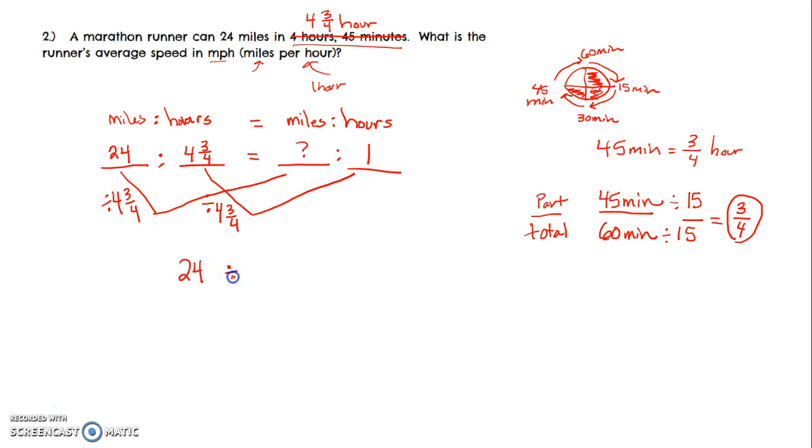So let's go ahead and do that. 24 divided by four and three-fourths. We first have to remember our standard algorithm for division. When we're going to divide, we need to rewrite this. The standard way is we need to rewrite this as an improper fraction. That would be our first step. So I always like visuals. So if I'm doing four and three-quarters, I know I have four whole circles and then three-fourths of another circle.